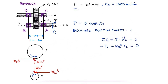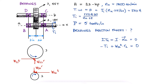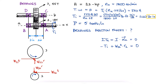We know that torque times angular velocity is equal to power, that angular velocity is the revolutions per minute times 2π over 60, and that 1 horsepower is 550 foot-pounds per second. The input torque is therefore 1,120 pounds-inch, and note that a conversion from pound-feet to pound-inches is needed.